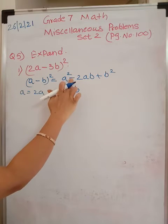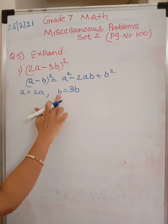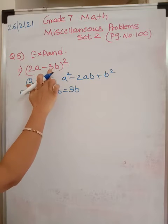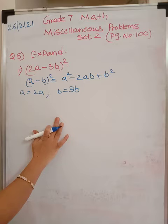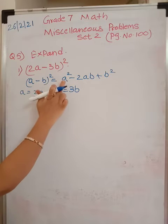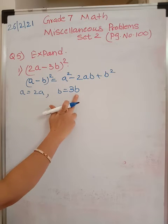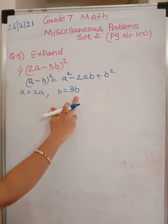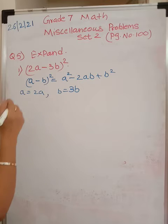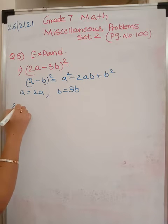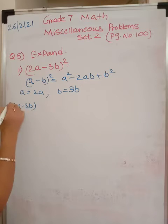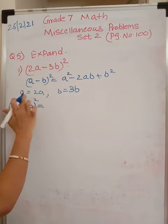Now, this minus sign is taken care of over here. So while writing a and b, do not write the value of b as minus 3b. Are you understanding? So wherever there is a in formula, you will write only 2a and wherever there is b, you would write only 3b, not minus 3b. Is this clear? So let us proceed now.